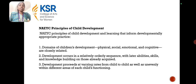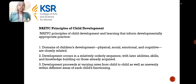Physical, social, and cognitive development occurs in a relatively orderly sequence, with later abilities, skills, and knowledge building on those already acquired. Development proceeds at varying rates from child to child, as well as unevenly within the different areas of each child's functioning.